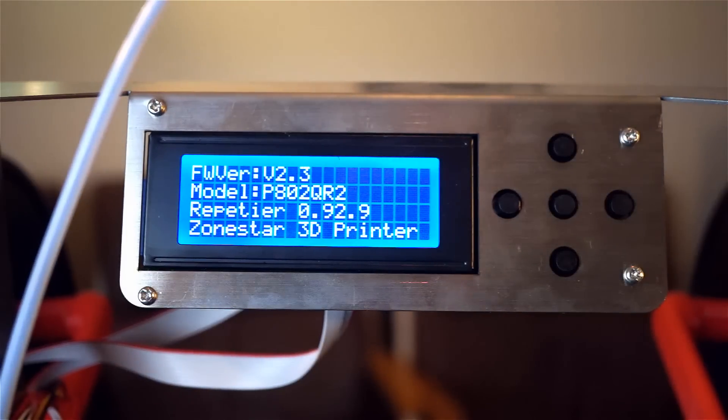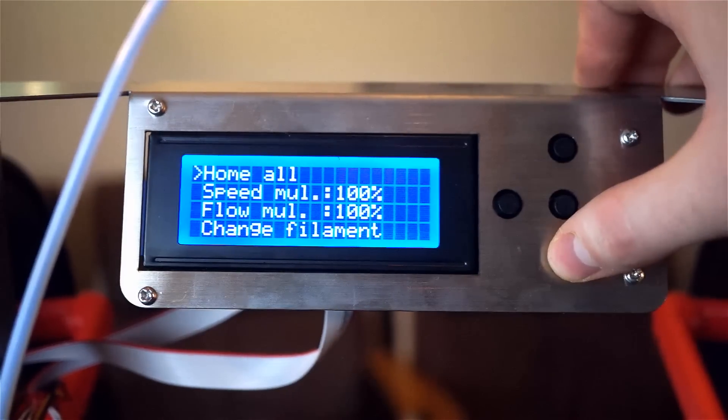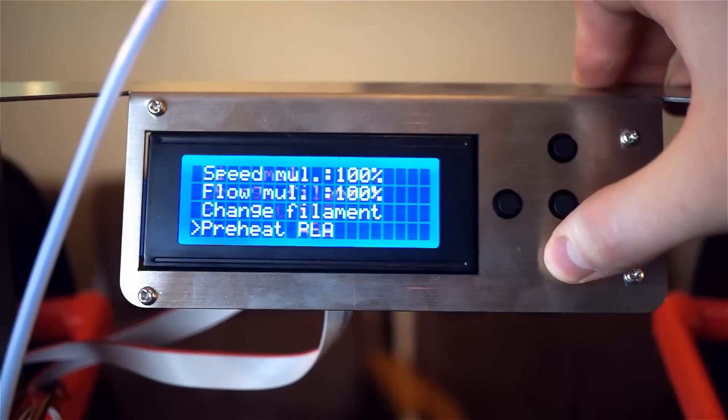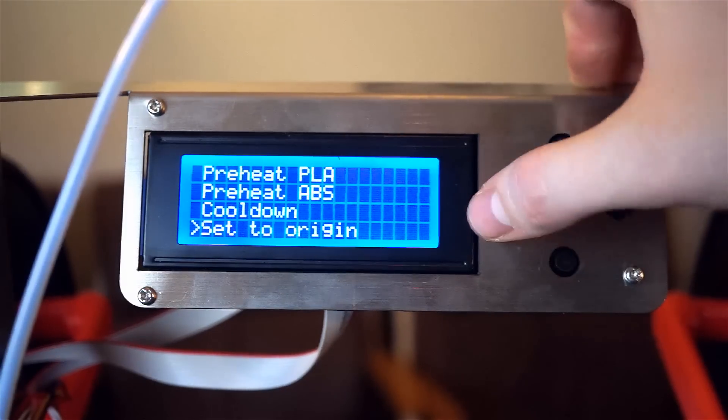I want to run through some of the options available on this machine. You have your standard quick settings like Change Filament, Home Access, Preheat and Cool Down.